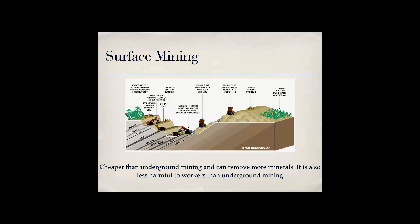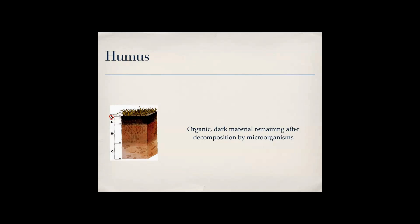Now humus is organic dark material remaining after decomposition by microorganisms. If you can see in this diagram O, A, B, and C, C is like the really hard stuff, B is a little bit lighter, A is a little lighter, but the O level is the kind of stuff you actually see on the ground, just walking on it. That's what you're actually walking on, organic dark material.